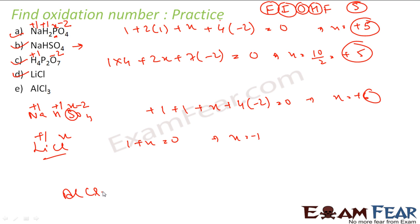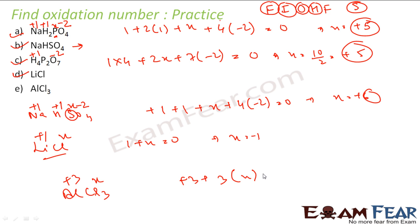Now AlCl₃. Not a free element, not an ion. No oxygen, no hydrogen, no fluorine. No group 1, no group 2. But group 13 — yes, aluminium is group 13, so it's plus 3. Chlorine is x. Sum rule: plus 3 plus 3x equals 0. Solving gives x equals minus 1. So chlorine is minus 1 in AlCl₃.